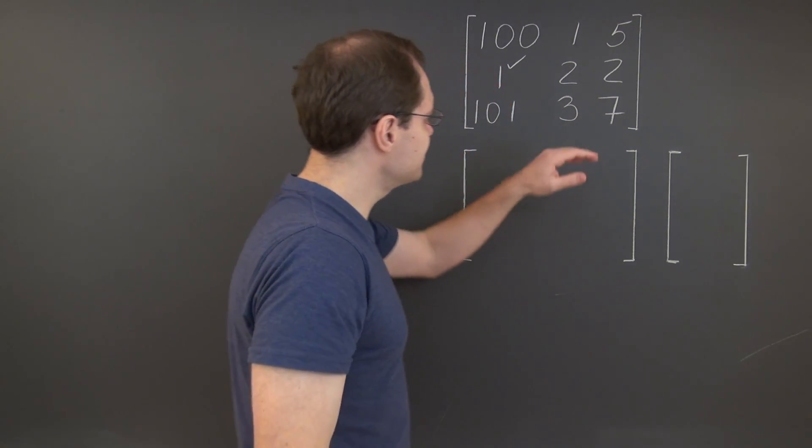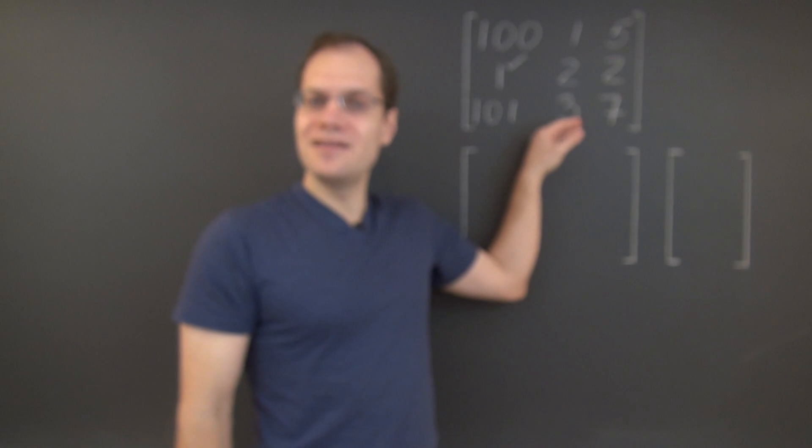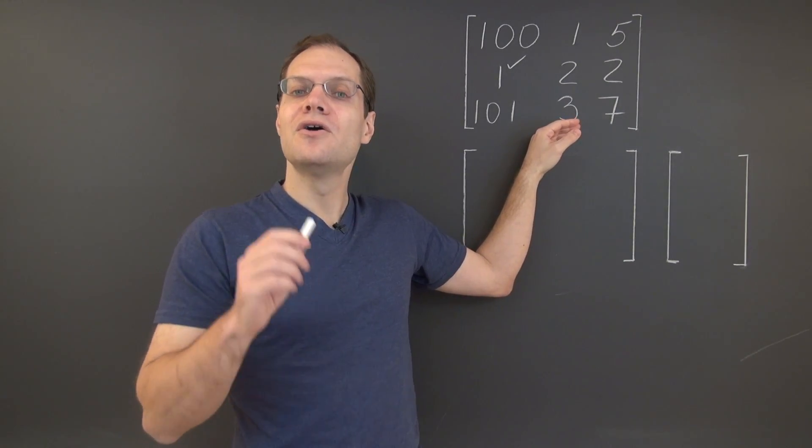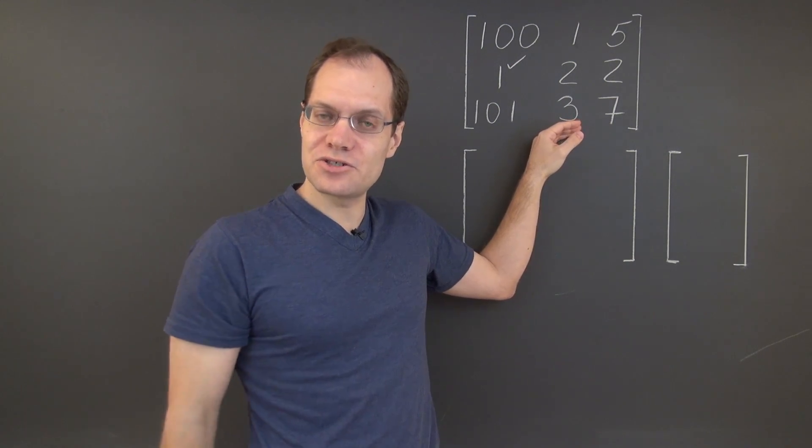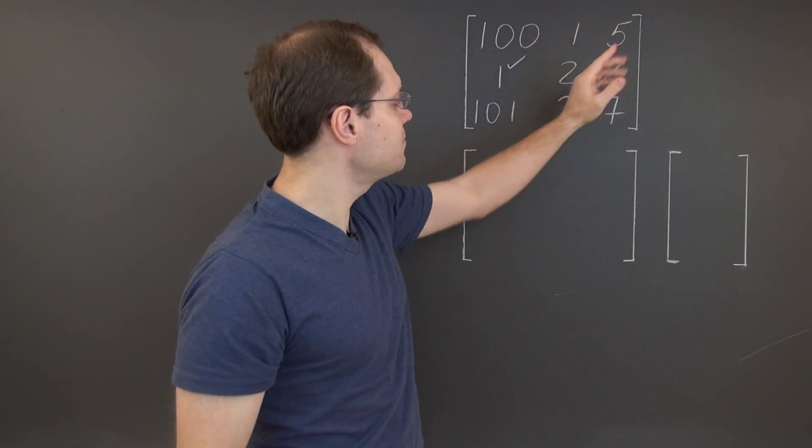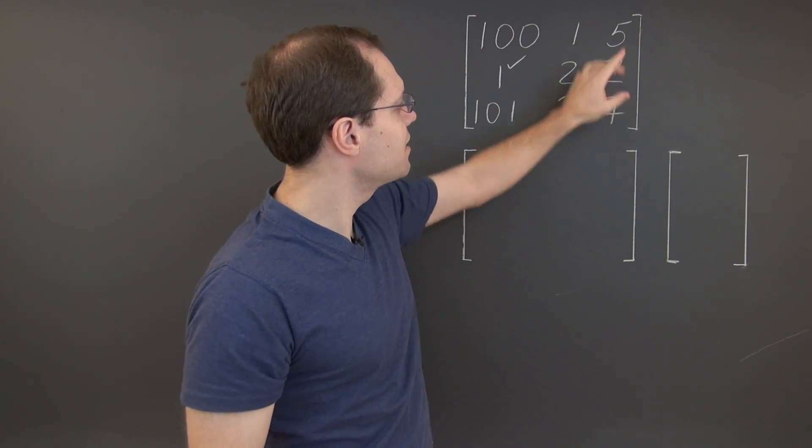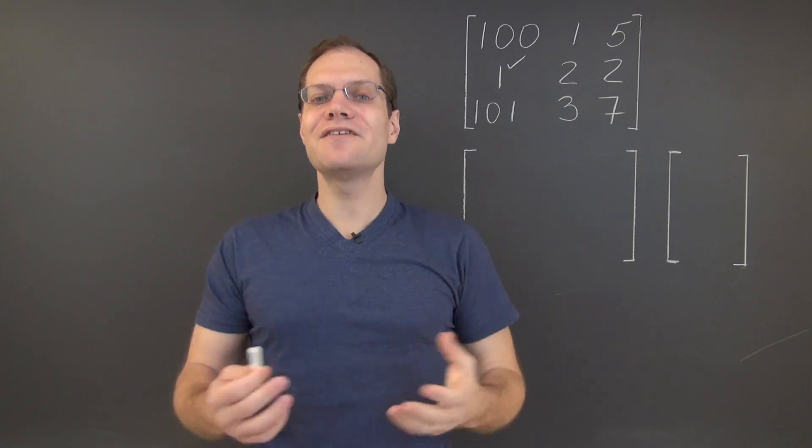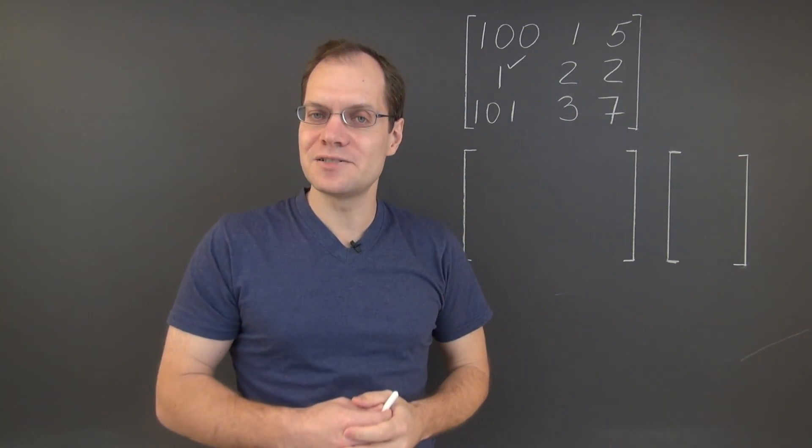Case in point, consider the problem of determining the null space of this matrix. Now, as we discussed before, we know that the null space of this matrix is non-trivial. Why? Because in each column, the last entry is the sum of the first two. So the columns are linearly dependent and therefore there exists a non-trivial null space.